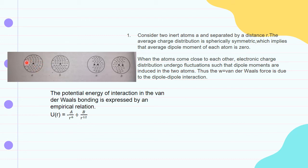The average charge distribution is spherically symmetric. The positive nucleus and the electron cloud are spherically symmetric, and the two charge centers coincide with each other. Therefore, there is no separation between the positive and negative charges, so the dipole moment is zero.